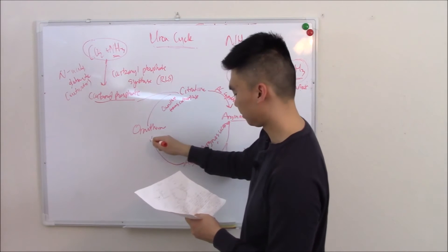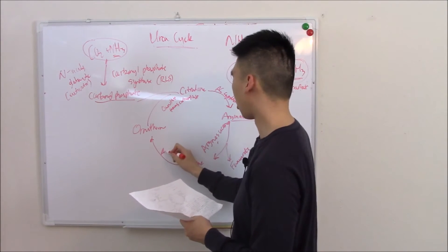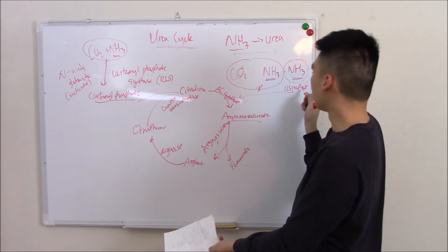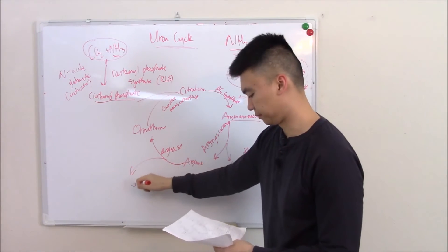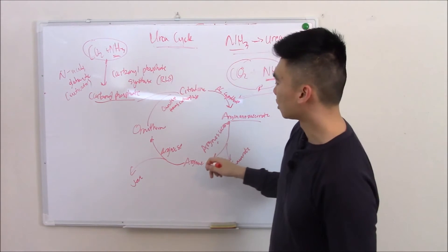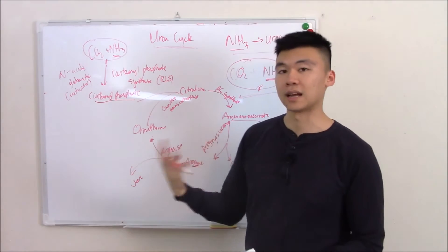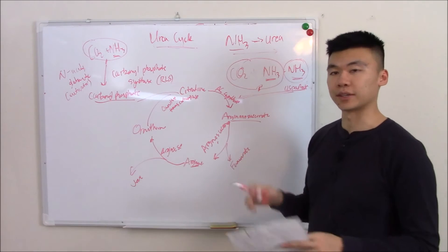Arginine becomes ornithine via arginase, and that urea that we've been holding on since aspartate came in, we finally let it go. So this is the step that we let that urea go. That is the urea cycle, that is the big picture.